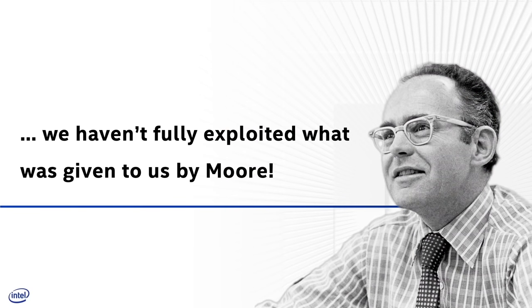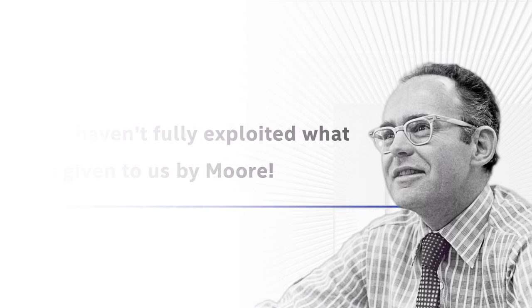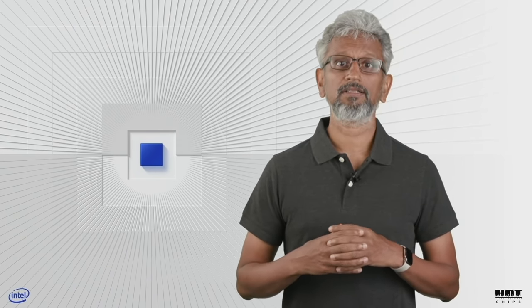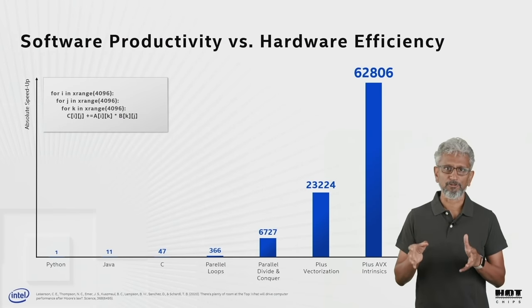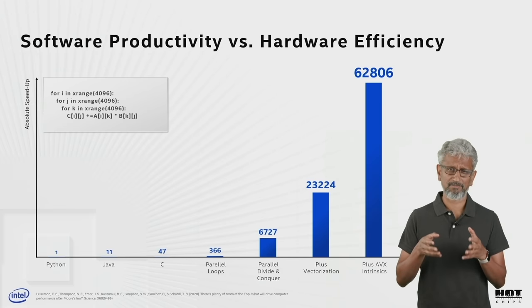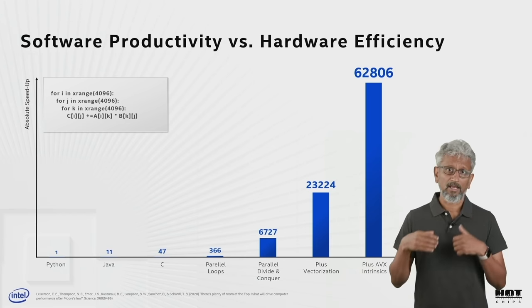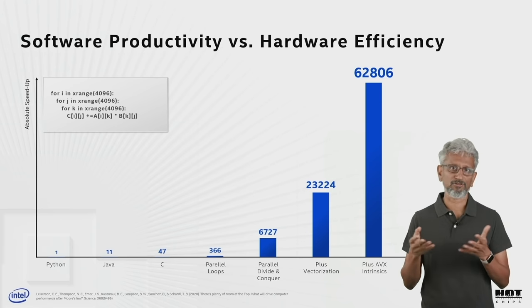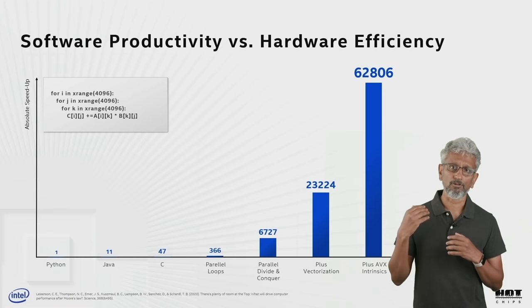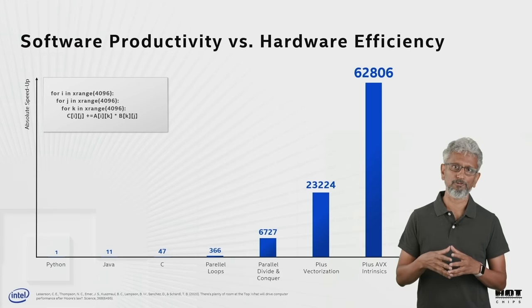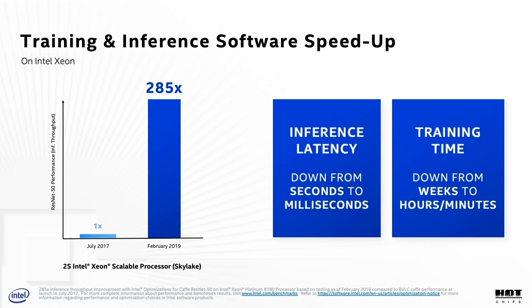We definitely haven't exploited the full entitlement of Moore's Law. There is plenty of room at the top. This simple-looking matrix multiplication loop can go up to 63,000 times faster on the same piece of hardware using different languages, compilers, and algorithms. And our own performance library team were able to extract over 100 times performance improvement on the same CPU with software updates. The new AI workloads gave us opportunities to optimize along vectors we didn't need to do before.